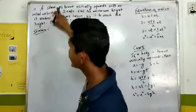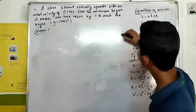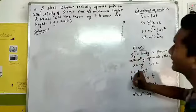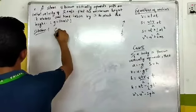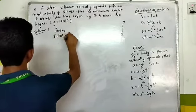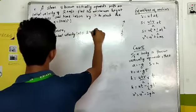The question is given here: a stone is thrown vertically upward. This case is given here. We have initial velocity of 20 meter per second. I can write here: given, initial velocity 20 meter per second.